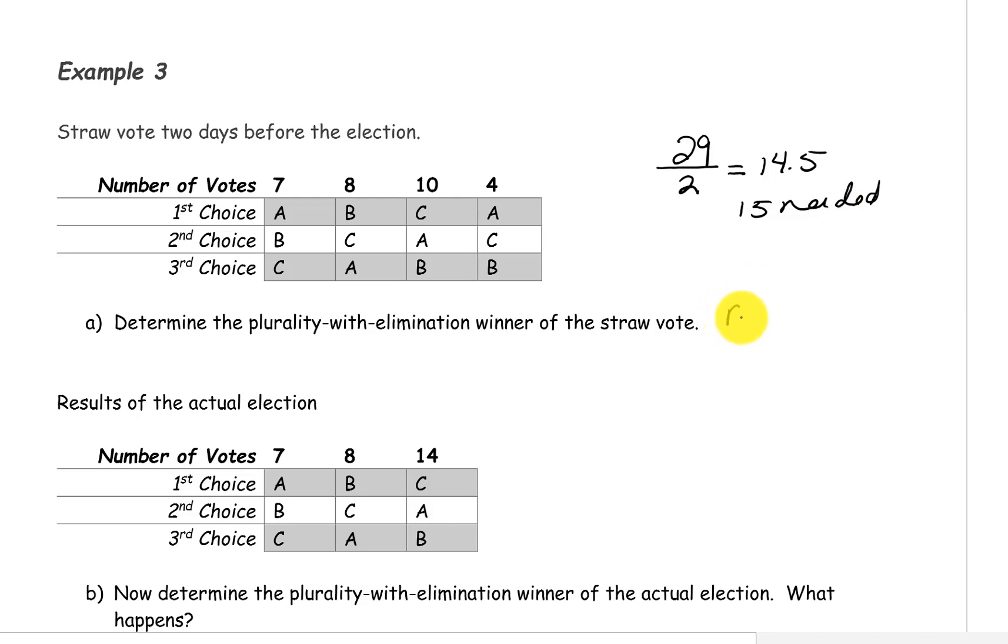Let's make up our chart. We have three candidates: A, B, and C. Candidate A has 7 and 4, so that's 11 first place votes. Candidate B has 8 first place votes, and Candidate C has 10 first place votes.